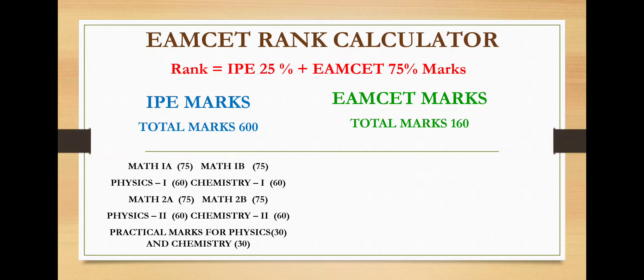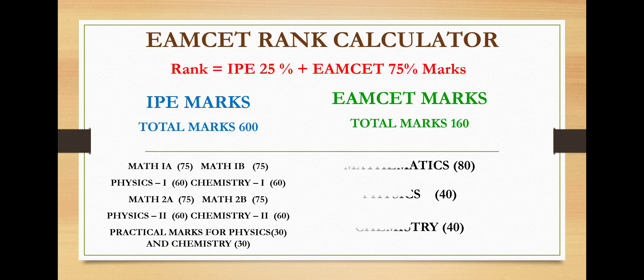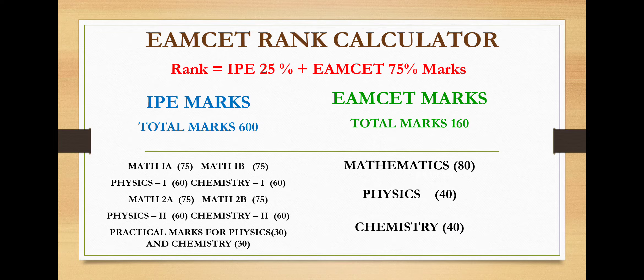Let us see EAMCET marks. Total marks of EAMCET is 160. The marks are based on 3 subjects: mathematics, physics, and chemistry. In mathematics the total marks is 80, in physics the total marks is 40, and in chemistry the total marks is 40.